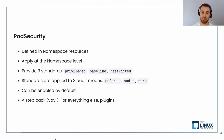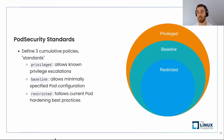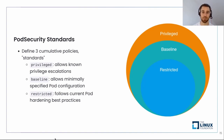The three standards are cumulative. Privileged allows everything. Baseline allows you to deploy a minimally configured pod — imagine the minimal pod definition you'd write. Restricted follows the current pod hardening best practices. That's it — you don't need to think about it, which is great.